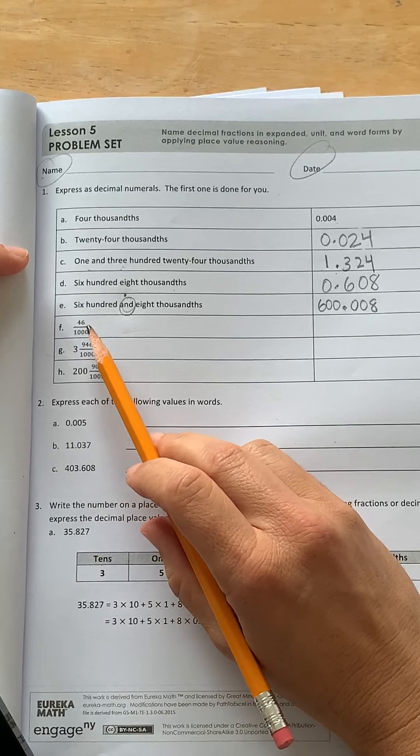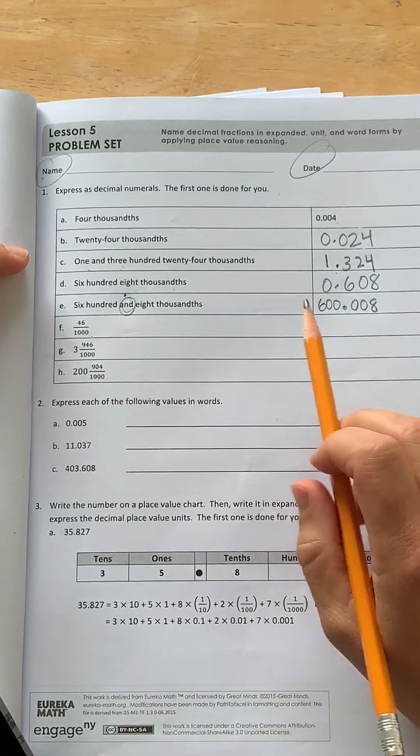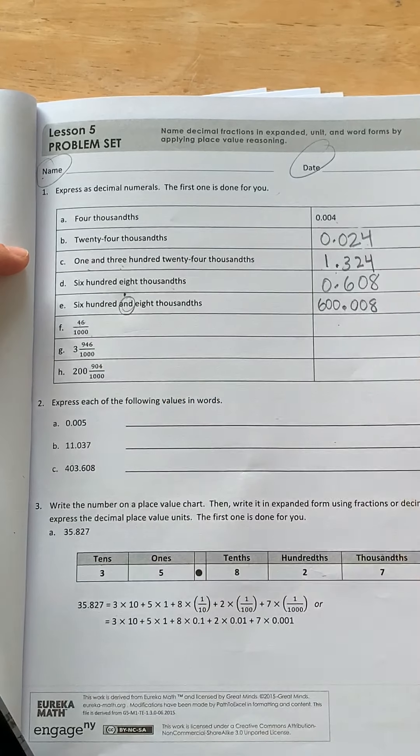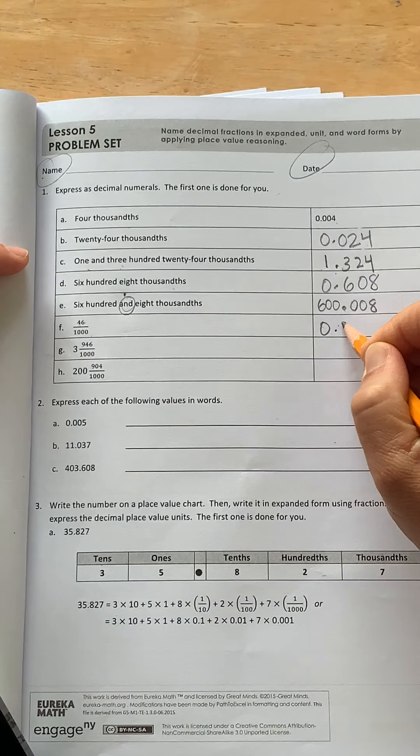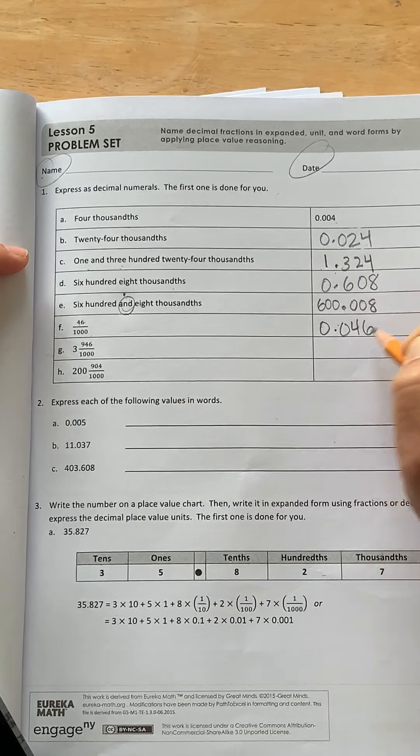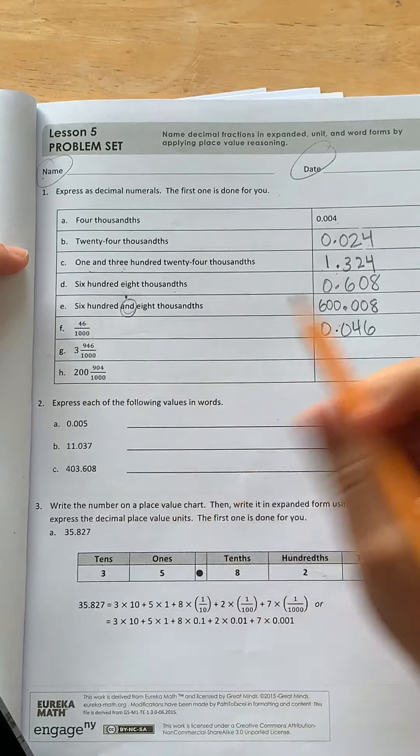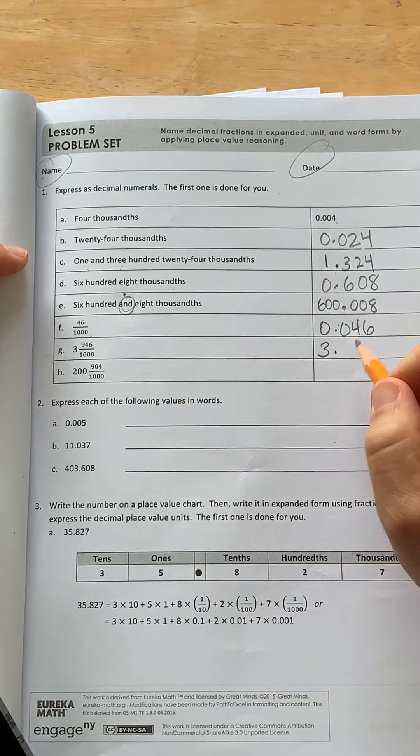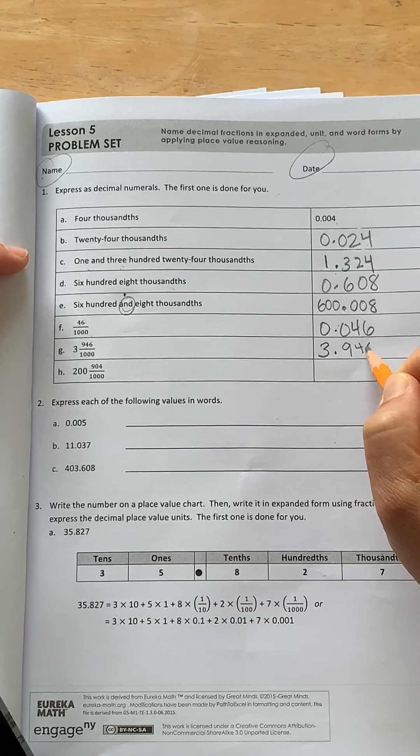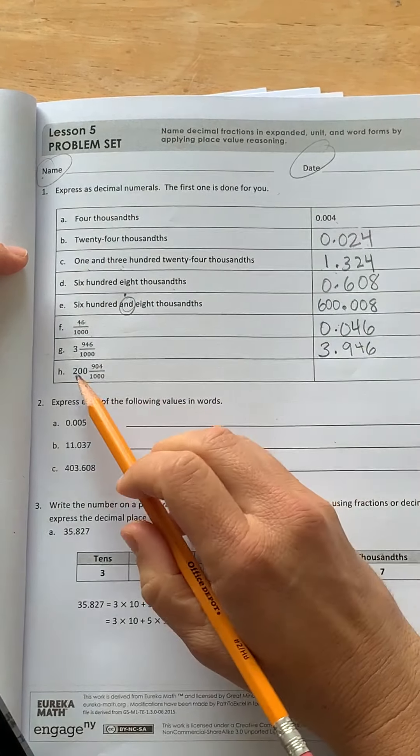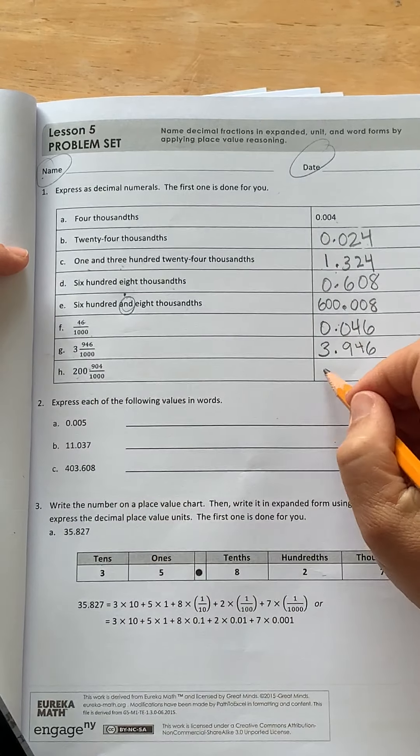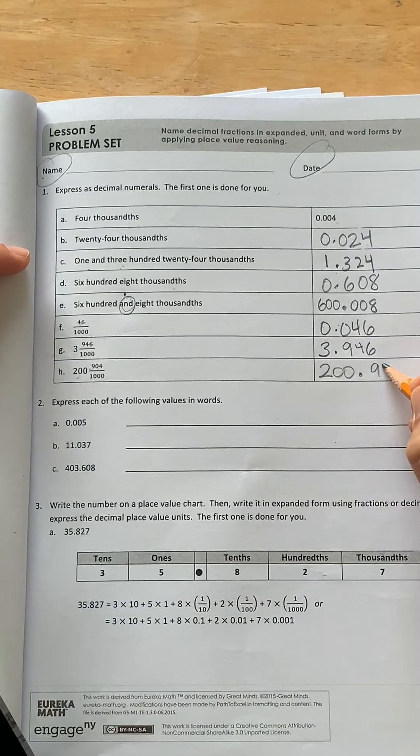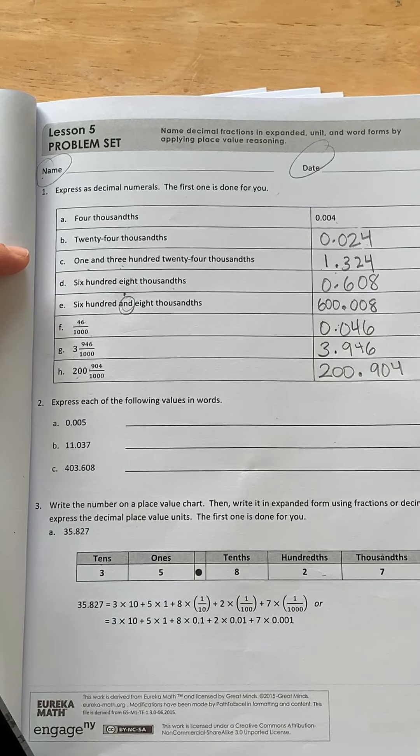Okay, this is going the opposite way. They write it as a fraction and we write it as a decimal. This says forty-six thousandths. Three and, so let me put the three and, the decimal, nine hundred and forty-six thousandths. Two hundred and this fraction. Two hundred and nine hundred and four thousandths.